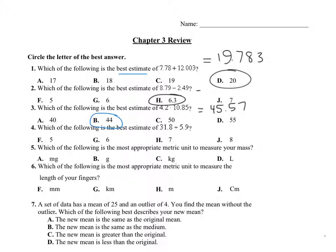And then number four, which of the following is the best estimate? So if you calculate 31.8 divided by 5.9, you get approximately, because this is a decimal that goes on for a long time, 5.3898. So which one is the closest to 5.3898? The answer is 5 is the closest.